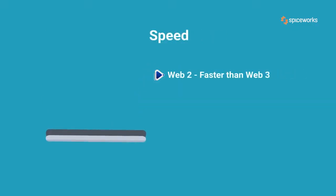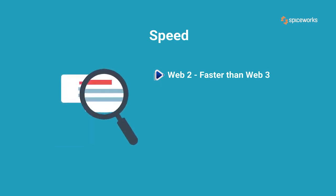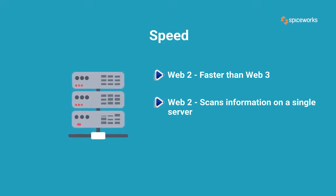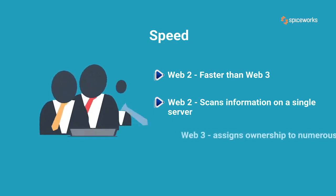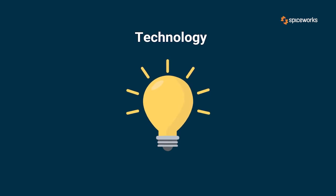Speed: Web 2 transfers are quicker than Web 3 transfers. Web 2 scans for information kept in a fixed place, generally on a single server, using HTTP and unique web addresses. Web 3 assigns ownership to numerous users.